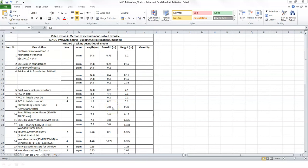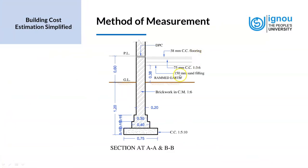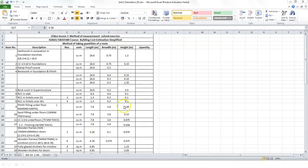To find the thickness of the rammed earth, we refer to the section drawing of the foundation. From the section drawing, the rammed earth extends from ground level to 0.38 meters. So the thickness is 0.38 meters. Entering this in the Excel sheet, the rammed earth item is 7.8 × 3.8 × 0.38.